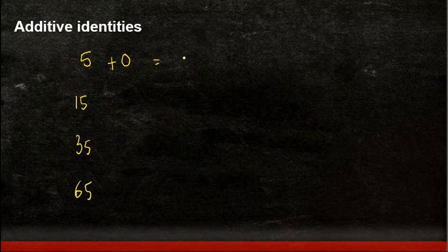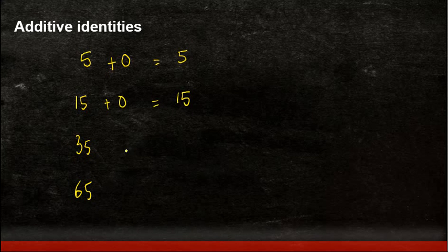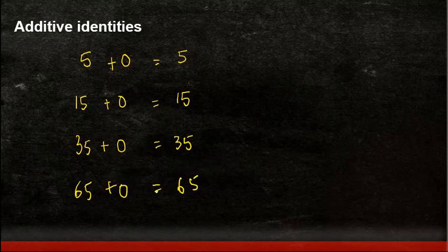5 plus 0 is equal to 5, right? Again if you add 0 to 15 what do you get? You get 15. 35 plus 0 equals 35, 65 plus 0 equals 65. Now if you notice what we are doing is...